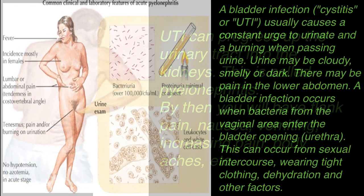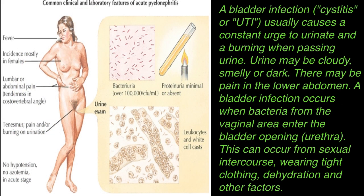A bladder infection, or cystitis, or a UTI usually causes a constant urge to urinate and a burning when passing urine. Urine can be cloudy, smelly, or dark. There may be pain in the lower abdomen. A bladder infection occurs when bacteria from the vaginal area enter the bladder opening, the urethra.